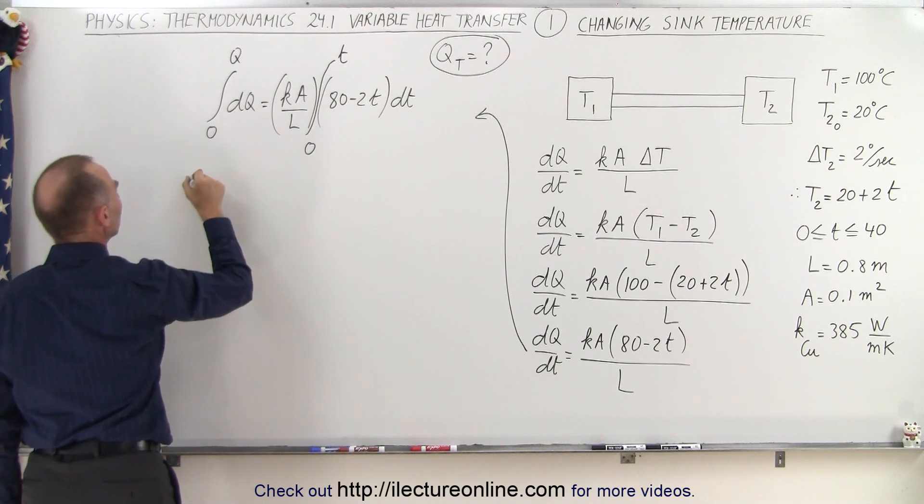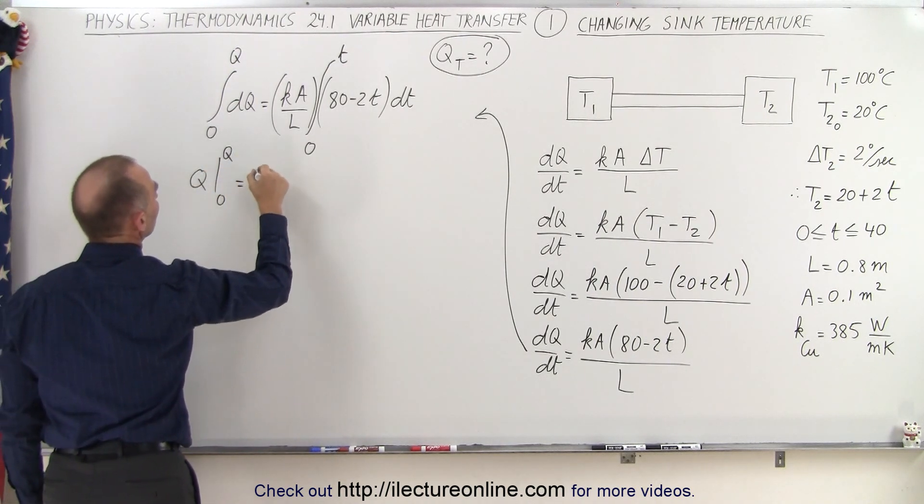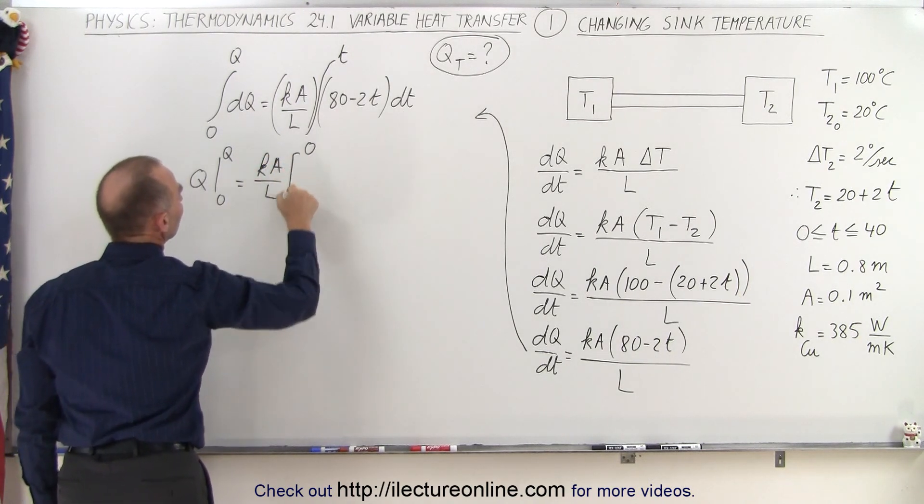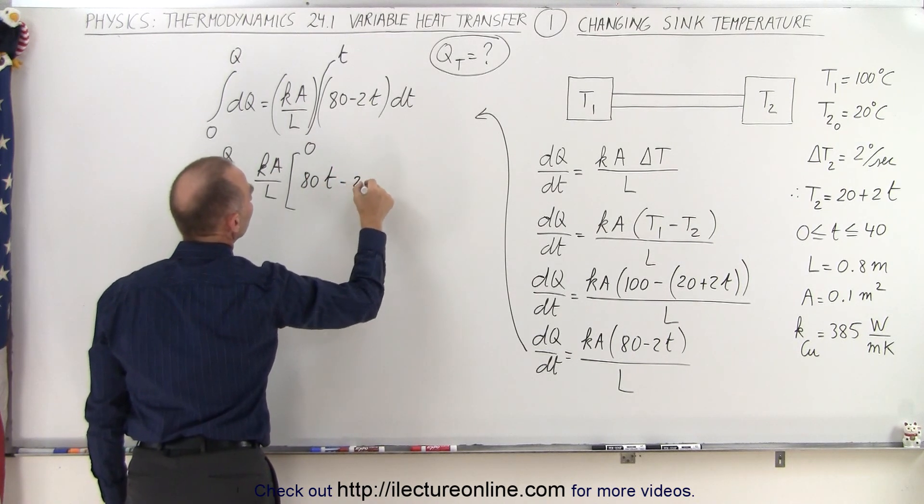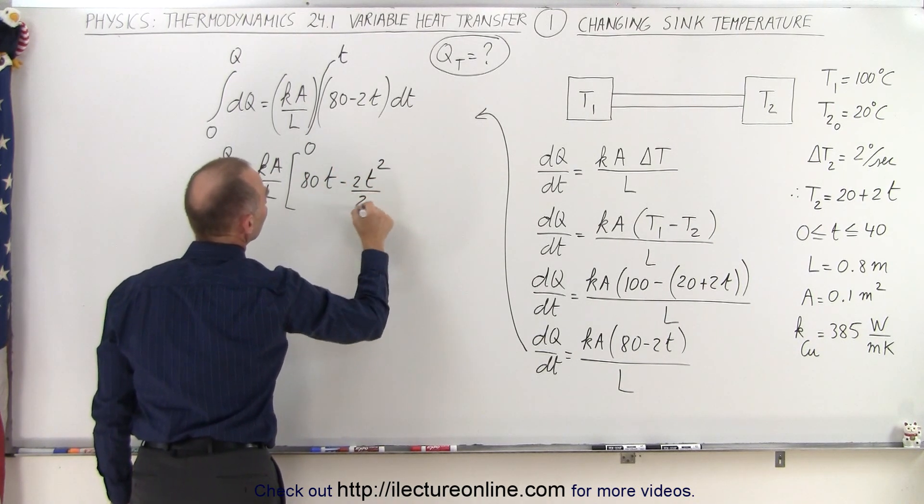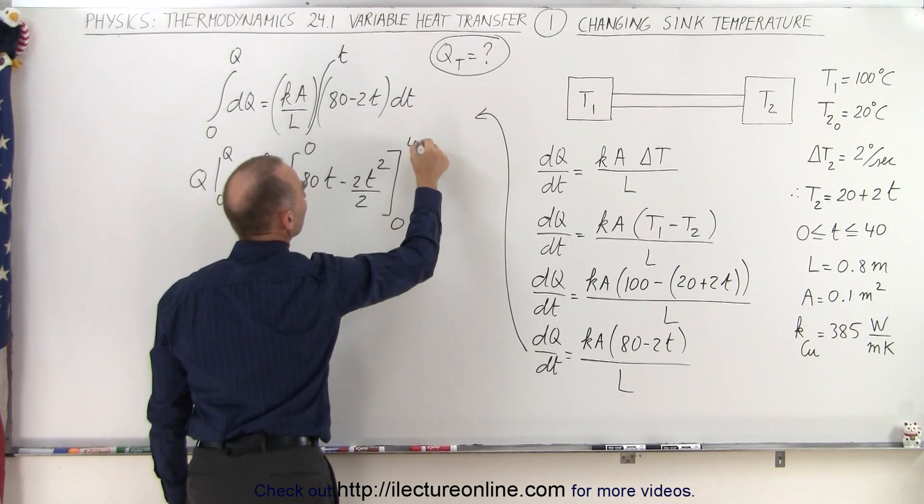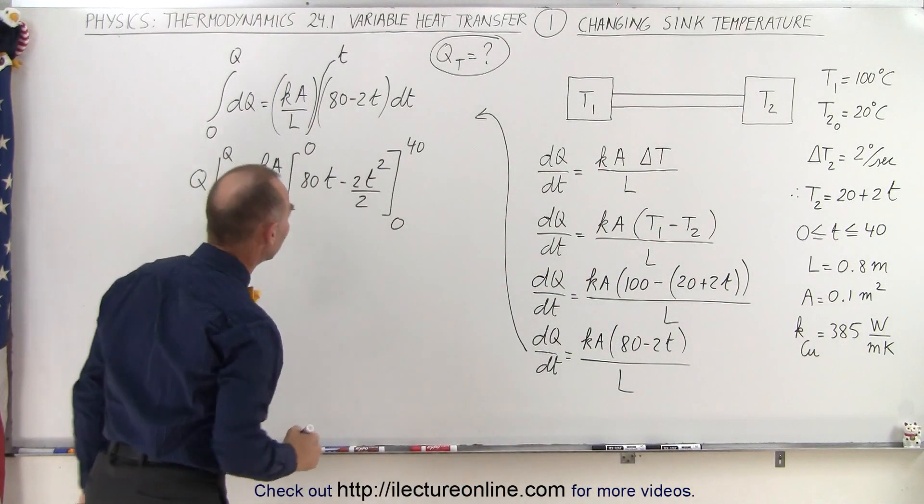So on the left side, we have Q evaluated from zero to Q is equal to kA over L. Now we're going to integrate this part. It'll be 80 times t minus 2t squared divided by 2, evaluated from time equal to zero to 40 seconds, because we know that we're going to do this for 40 seconds until the temperatures are equal.